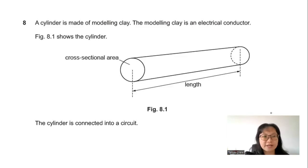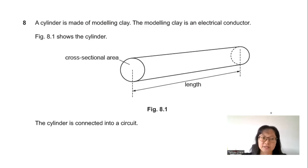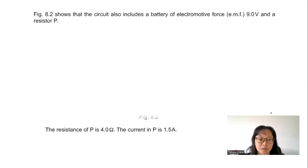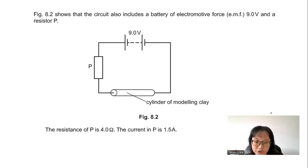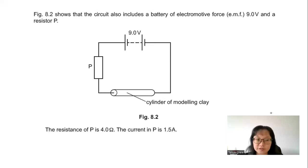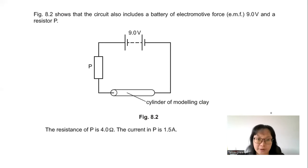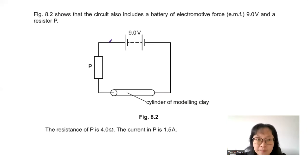Question 8: A cylinder of modeling clay, which is an electrical conductor, is connected in series with a battery of EMF 9 V and resistor P. The resistance of P is 4 Ω and the current through P is 1.5 A. In a series circuit, the same current flows through both P and the modeling clay.